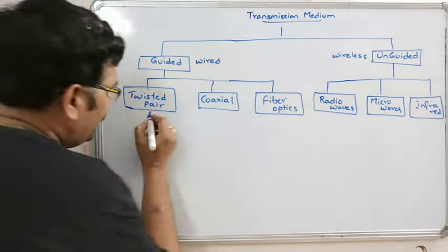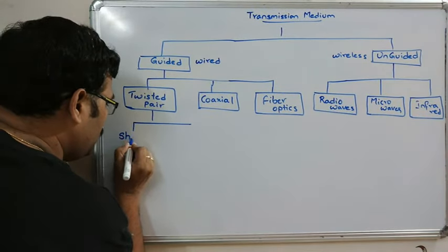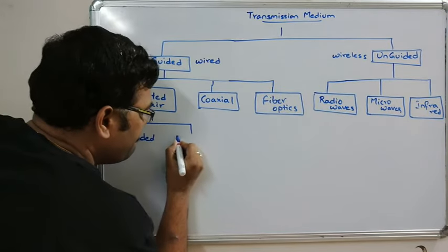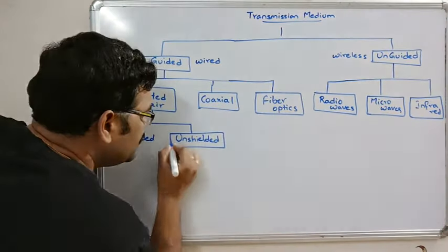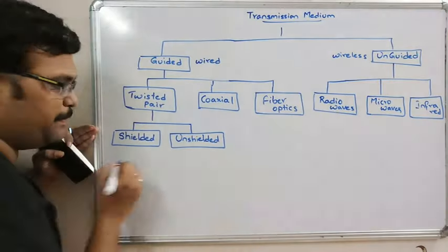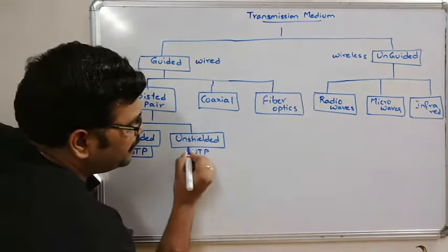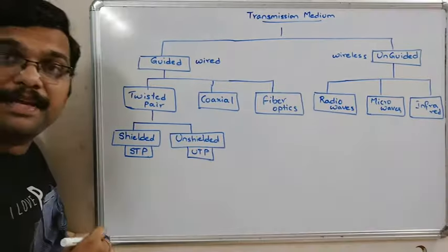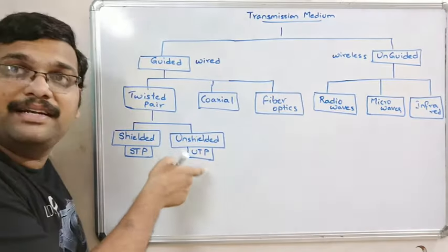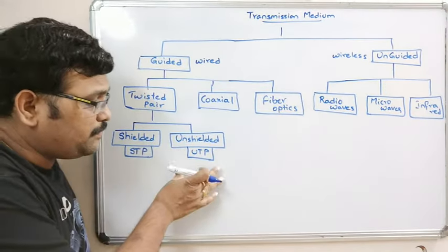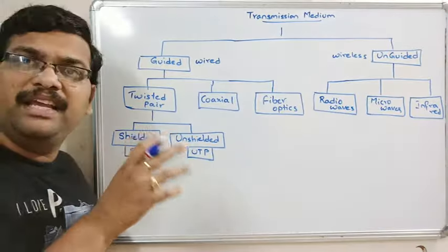Twisted pair is again classified into two types: shielded twisted pair (STP) and unshielded twisted pair (UTP). In unshielded twisted pair, there are two wires — one for data and another for ground — both in a twisted manner.